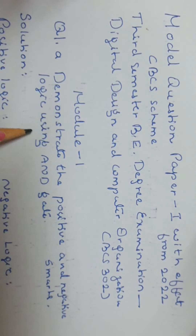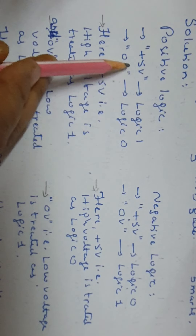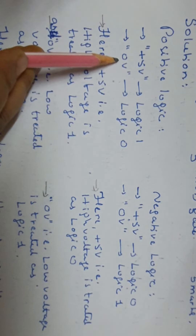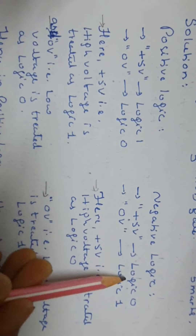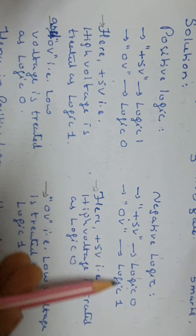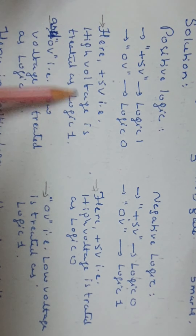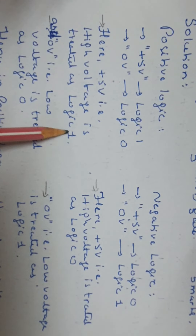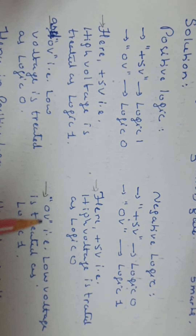Demonstrate positive and negative logic using AND gate. The solution is as follows. In positive logic, plus 5 volts is treated as logic 1 and 0 volts is treated as logic 0. In negative logic, plus 5 volts is treated as logic 0 and 0 volts is treated as logic 1.